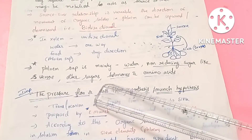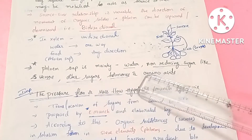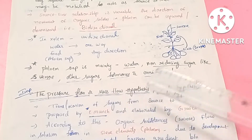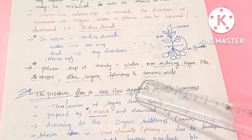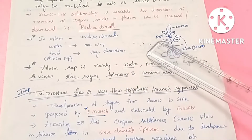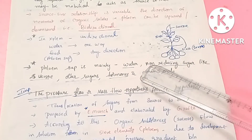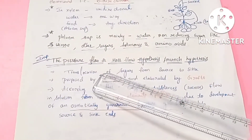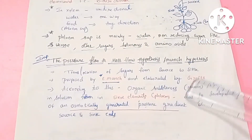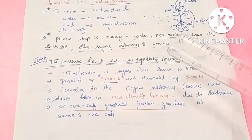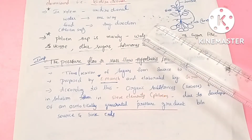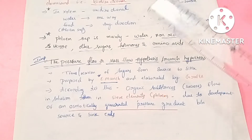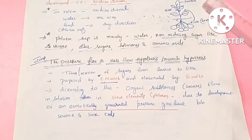Phloem sap is mainly water, with non-reducing sugars like sucrose, other sugars, hormones, and amino acids. The next important concept is the pressure flow hypothesis, also called the mass flow hypothesis or the Munch hypothesis. This hypothesis explains the translocation of sugars from source to sink.